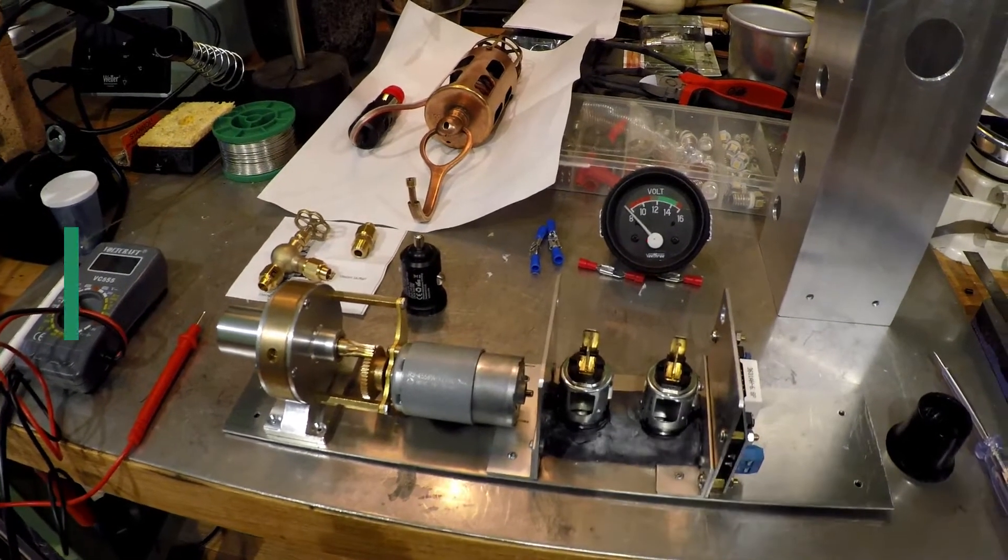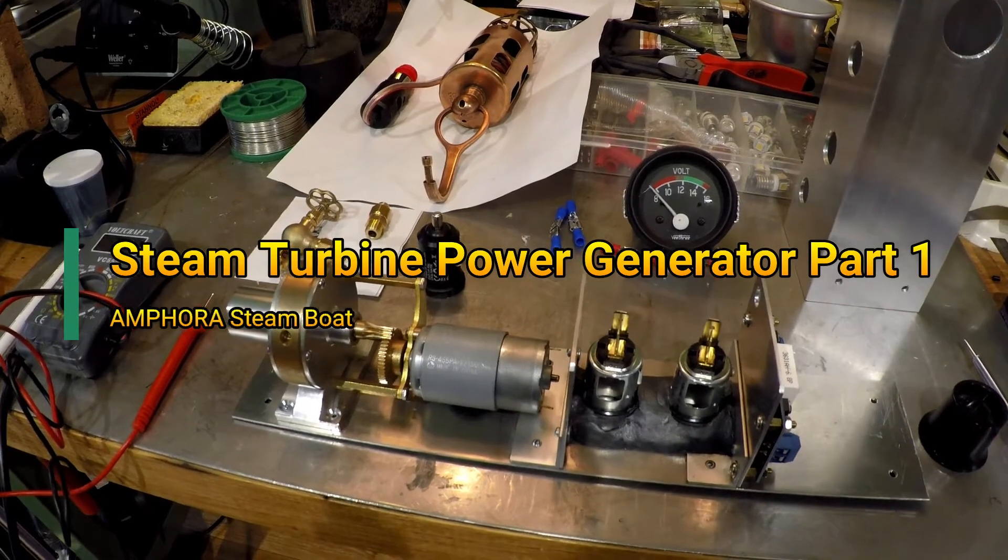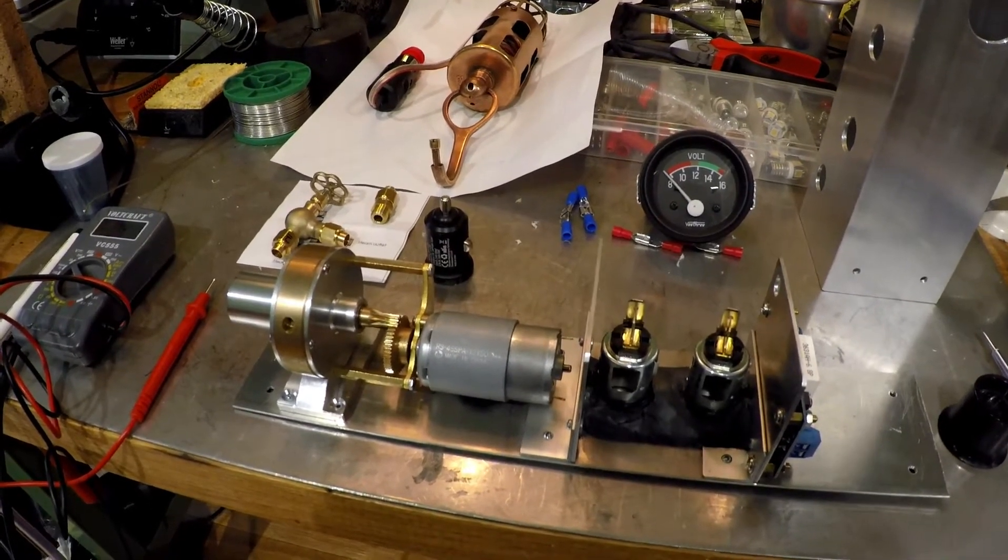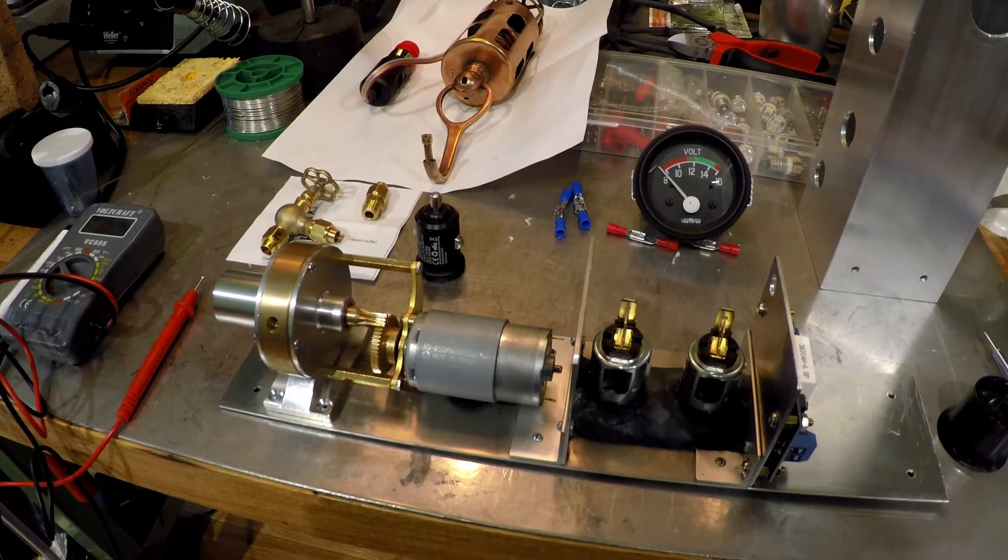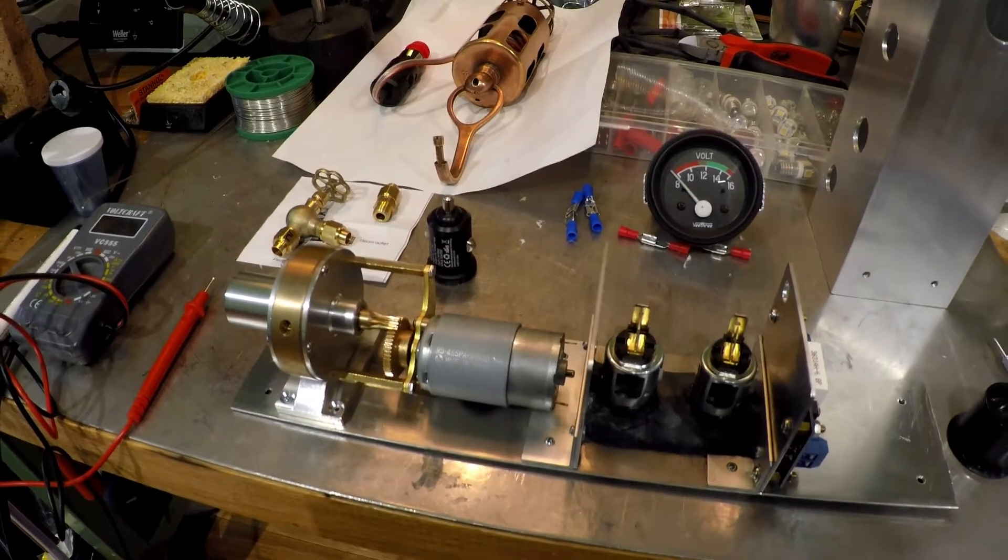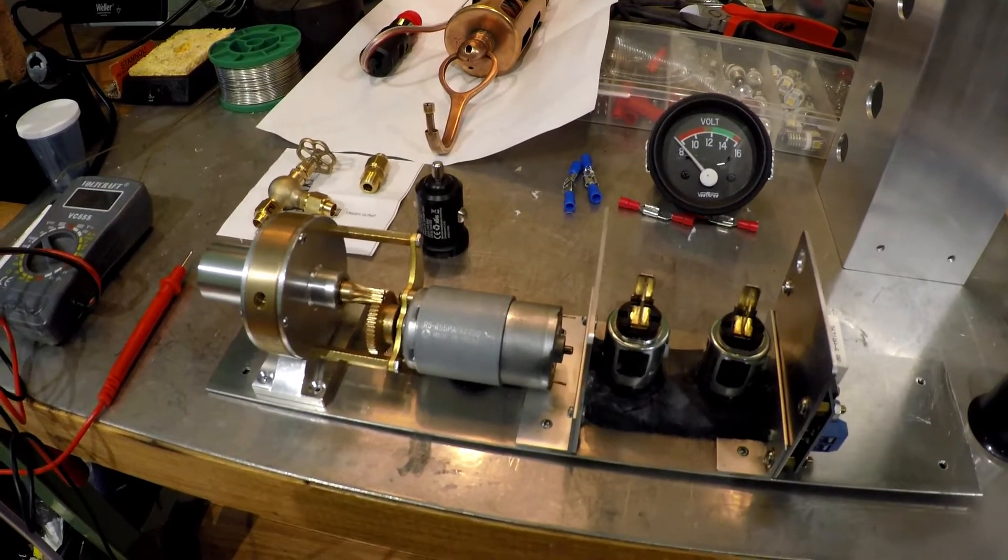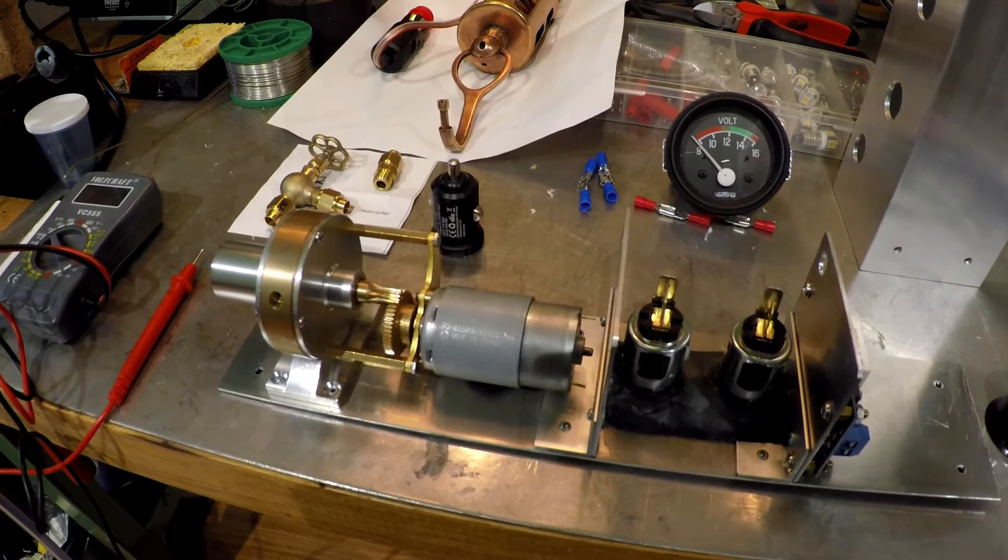Today I will show you how I built a steam generator which generates from steam a voltage of 12 to 13 volts, and the idea is to use this power to light a bulb.